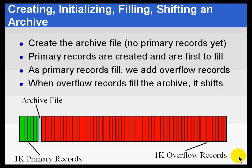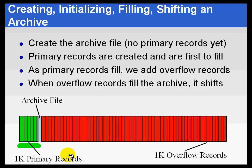When you first create and register an archive, no primary records are created at that point. You simply have an empty file with no primaries generated. When the PI Server shifts into that archive because the previous primary archive is full, then we initialize this new archive. At that point, we create the primary records associated with that archive. So with a 10,000 tag system, you'll have 10,000 primary records allocated — but they're not filled yet.